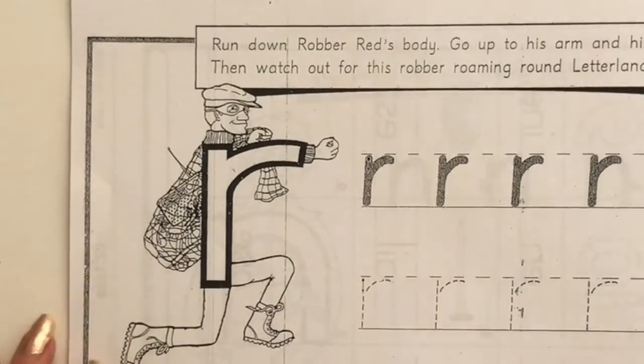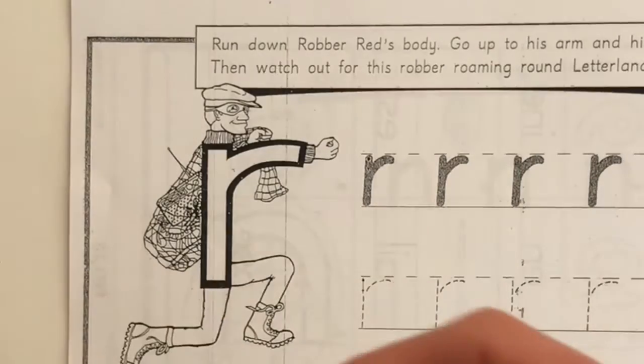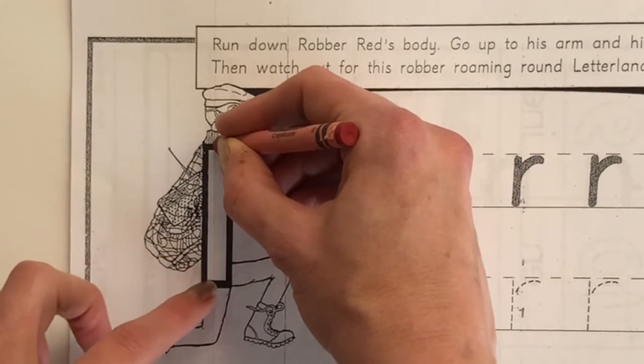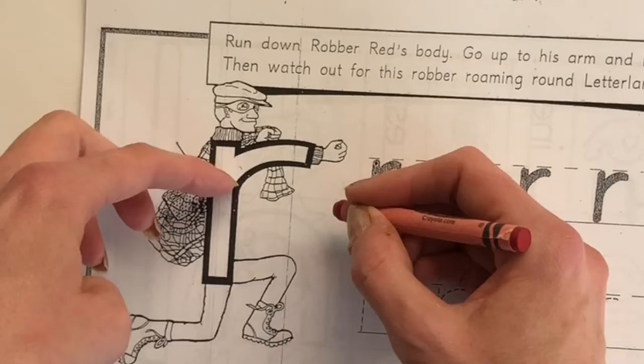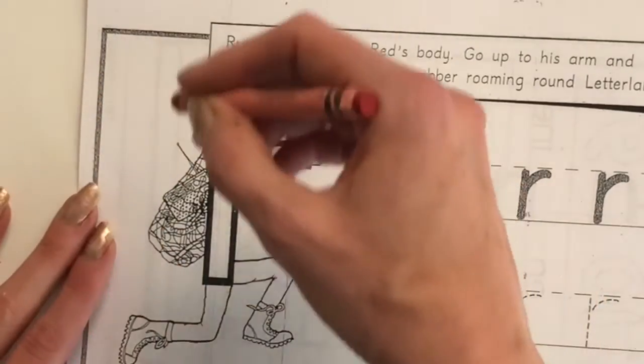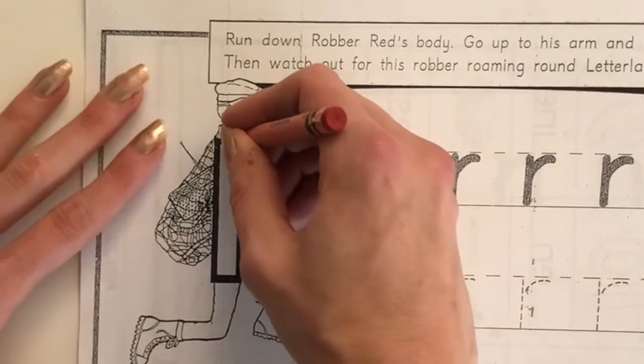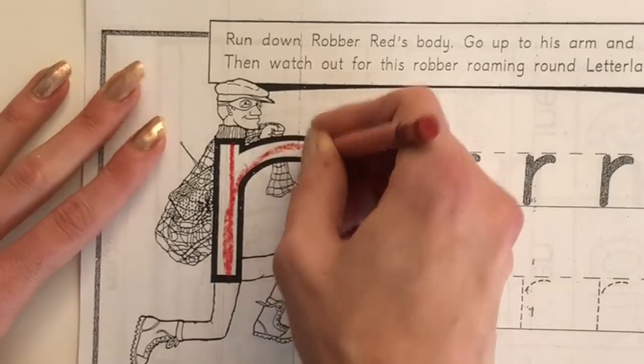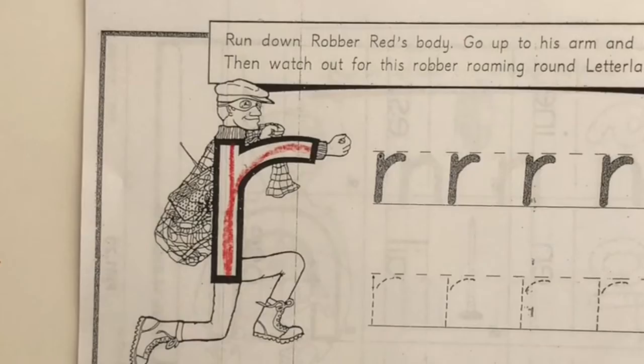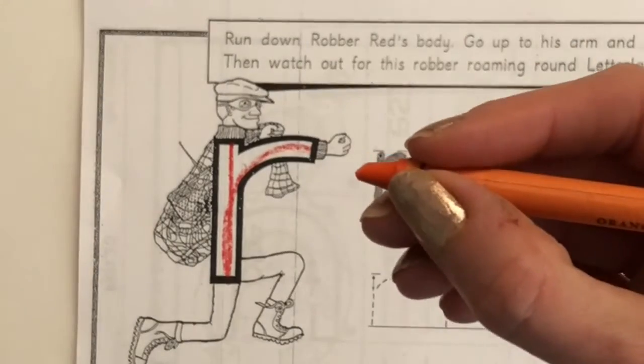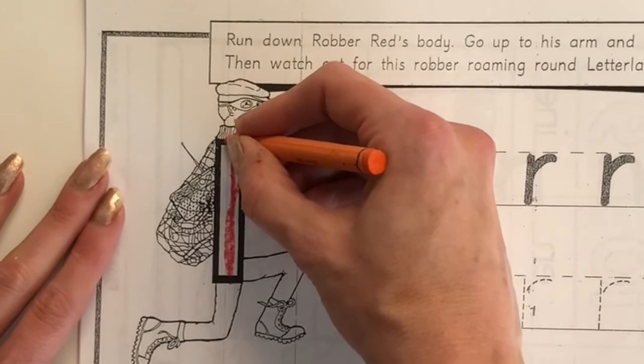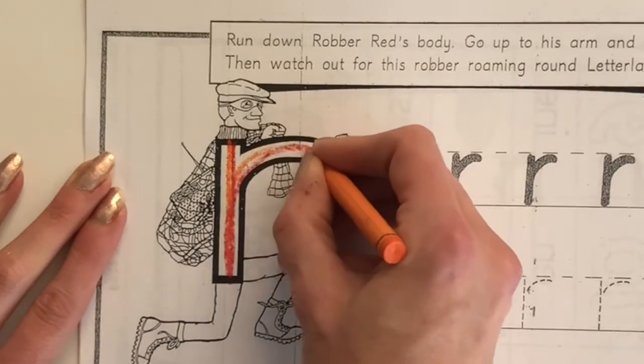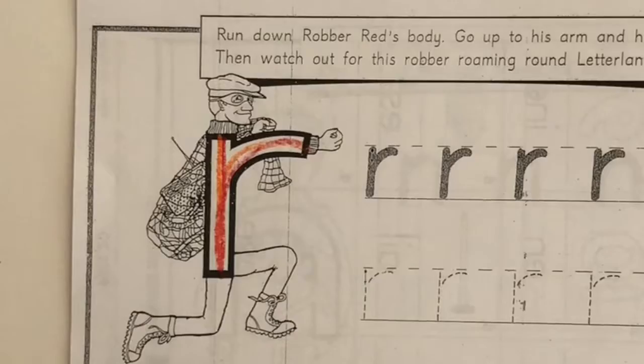I am going to start my rainbow writing. I'm going to pick up my red. I'm going to start his neck and I'm going to go down to his hips, but I'm going to bounce right back up without stopping and go to his hand. So we go down and up and then lift our color. We're going to run down his body, go up to his arm and his hand, then lift your color. Then switch to orange. Start at his neck, run down his body, go up to his arm and his hand.